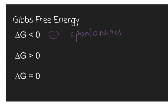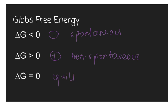Whereas when we have a delta G, or change in Gibbs free energy, that is greater than zero — a positive value — we know that that's a non-spontaneous reaction. And when we have a delta G that is equal to zero, then we say that that is actually an equilibrium system.